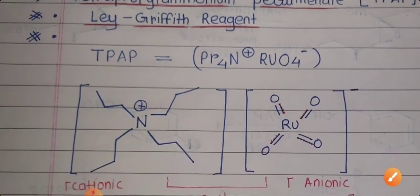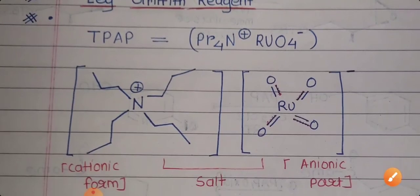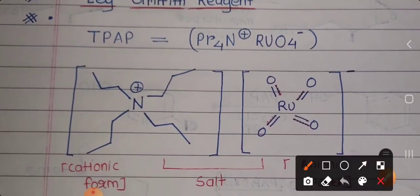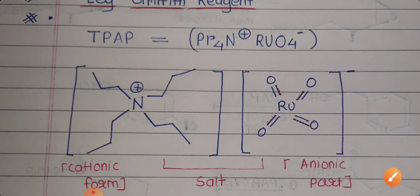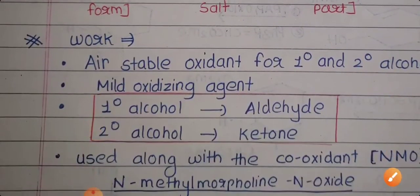Now let us have a look at the structure of this reagent. The TPAP reagent — tetrapropyl ammonium perruthenate — is present in the form of a salt. You can see here: this is the tetrapropyl ammonium cation, and this is the perruthenate anion. The cationic part is formed by the tetrapropyl ammonium, and the ruthenium-containing perruthenate forms the anionic part of the salt.